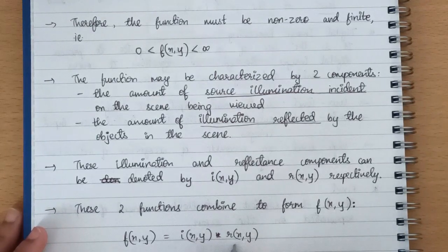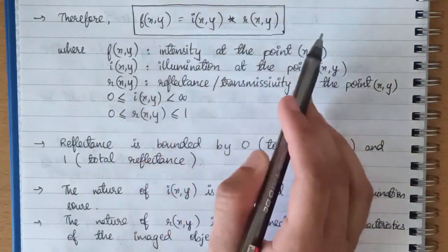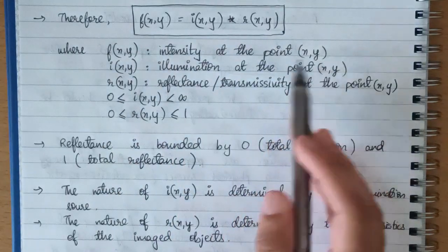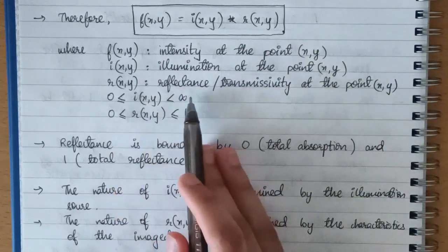So we can write this equation again where f represents the intensity of the point x comma y, i represents the illumination of the point x comma y, and r represents the reflectance or transmissivity at the point x comma y.